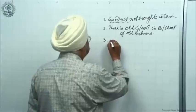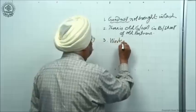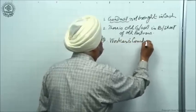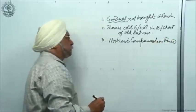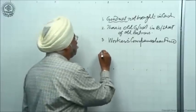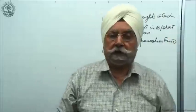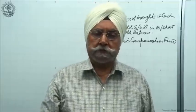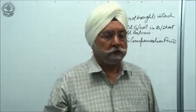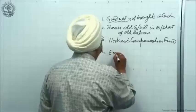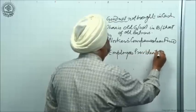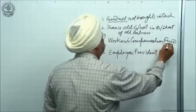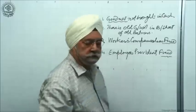The third item is the Workers' Compensation Fund, and the fourth one is another fund in the balance sheet of the old partners which can be confusing — you have to learn how to treat it. That is the Employees' Provident Fund. Both are funds, but their treatments are different.